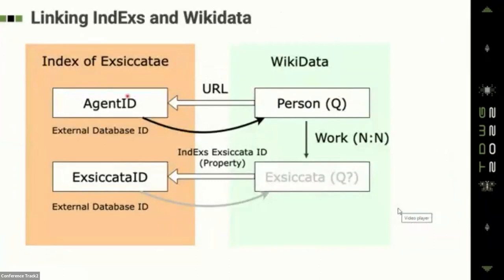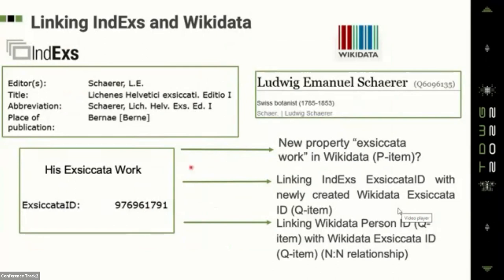Once we know who the persons really are, Wikidata gives us a Q identifier which can be linked to our agent ID through a URL as an external database identifier. The big question is: how do we link the editors' exsiccatae work to their Wikidata items, given this N-to-N relationship? For example, Ludwig Emmanuel Charé has a Wikidata Q item we can link to the Index. Do we make a new exsiccatae property in Wikidata, create new Q items for every exsiccatae series, or link Wikidata person IDs with Wikidata exsiccatae IDs?